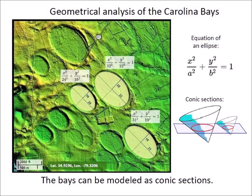Carolina Bays in level terrain with a deep layer of unconsolidated soil are perfect ellipses. An ellipse with the same width-to-length ratio as a Carolina Bay will fit the bay exactly after scaling and rotating the ellipse. Although many bays have been deformed by terrestrial processes and human activity, the bays that are well preserved have an elliptical shape. It is possible to conclude that the archetype shape of the Carolina Bays is elliptical and that the bays can be modeled as mathematical conic sections.